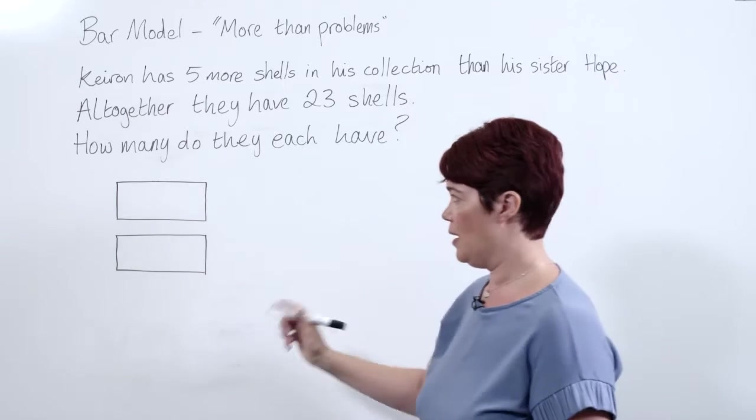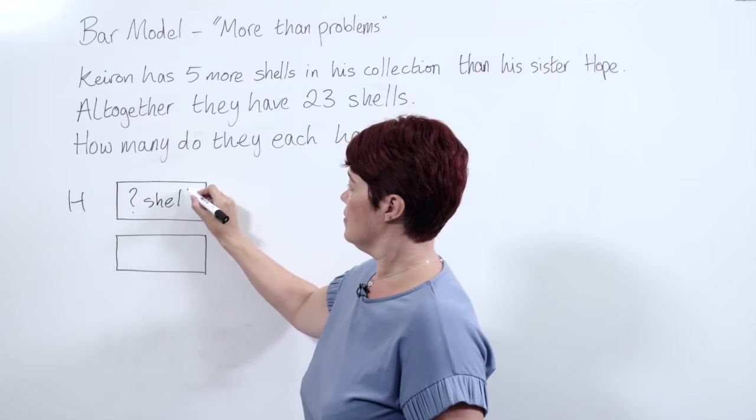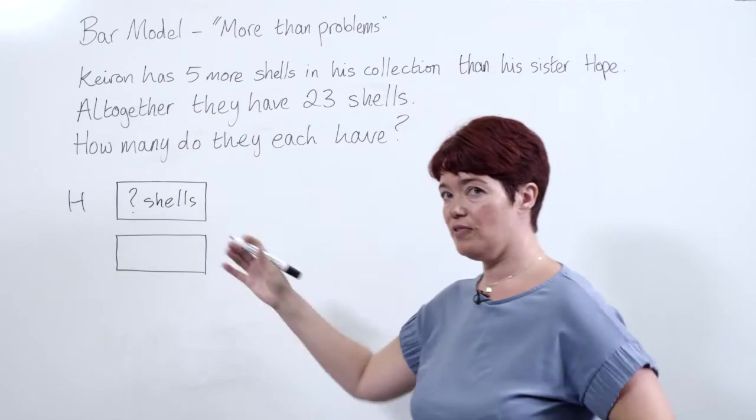Okay, so we're going to start with Hope. Hope has some shells, so we're going to label this bar with a question mark for the unknown, some shells.